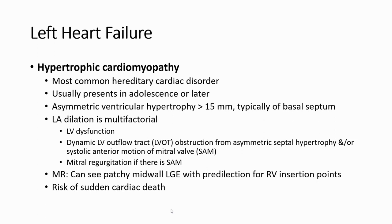Hypertrophic cardiomyopathy is the most common inherited cardiac disorder, usually presenting in adolescents or later as asymptomatic asymmetric ventricular hypertrophy of more than 15 mm. On MRI, we can see patchy midwall late gadolinium enhancement with predilection for the right ventricular insertion point, with risk of sudden cardiac death.